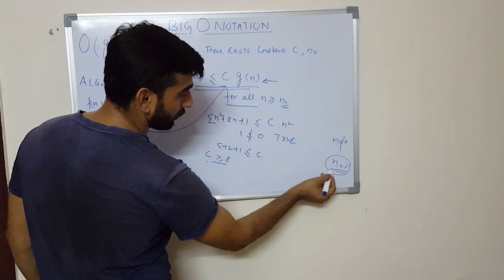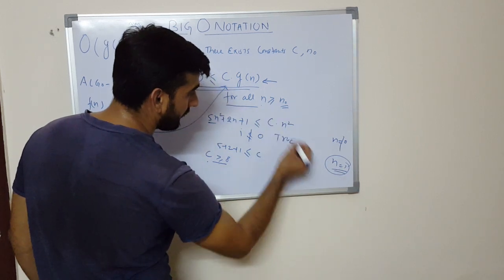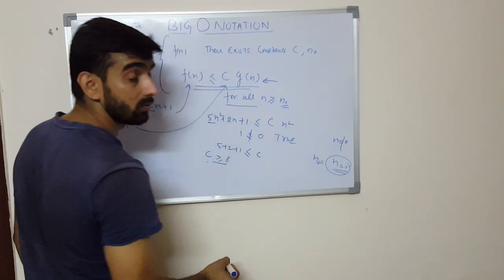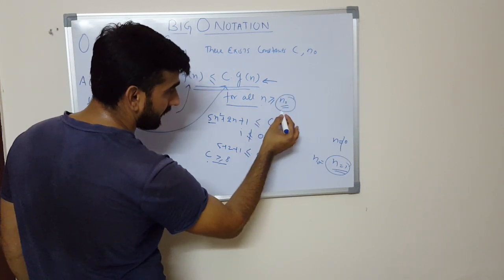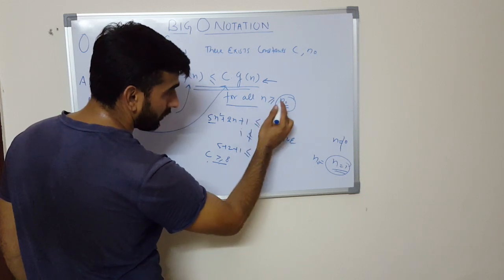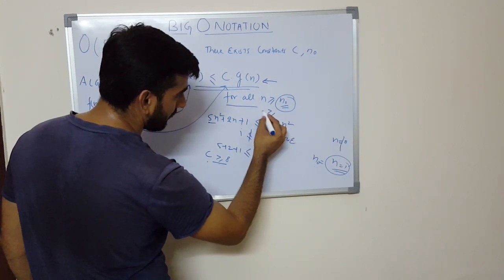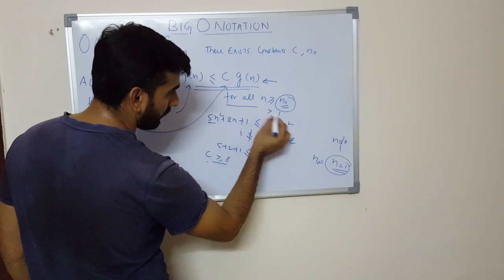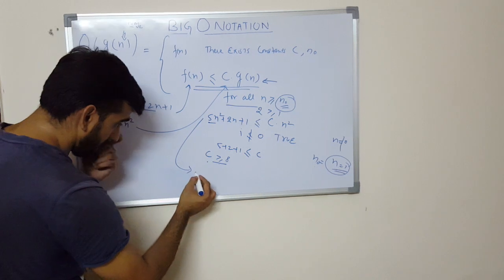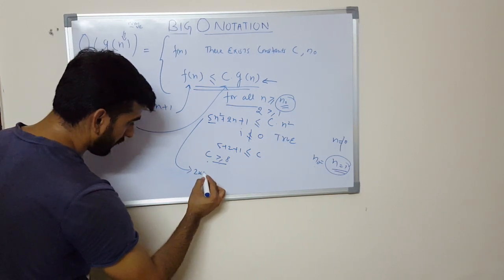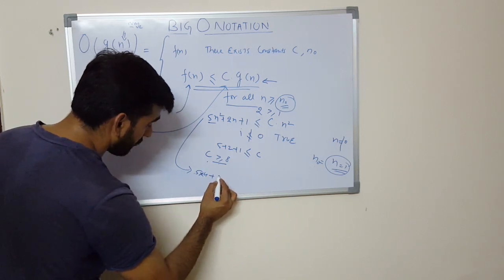So from here we can conclude that this value of n is equal to 1, which denotes n0. So if I take any value which is greater than n0, which is 1, if I take 2 in this expression and put it, then it will be 5 times n² which is 4, plus 4, plus 1, is less than c, and the value of c is 8, and n² is 4.